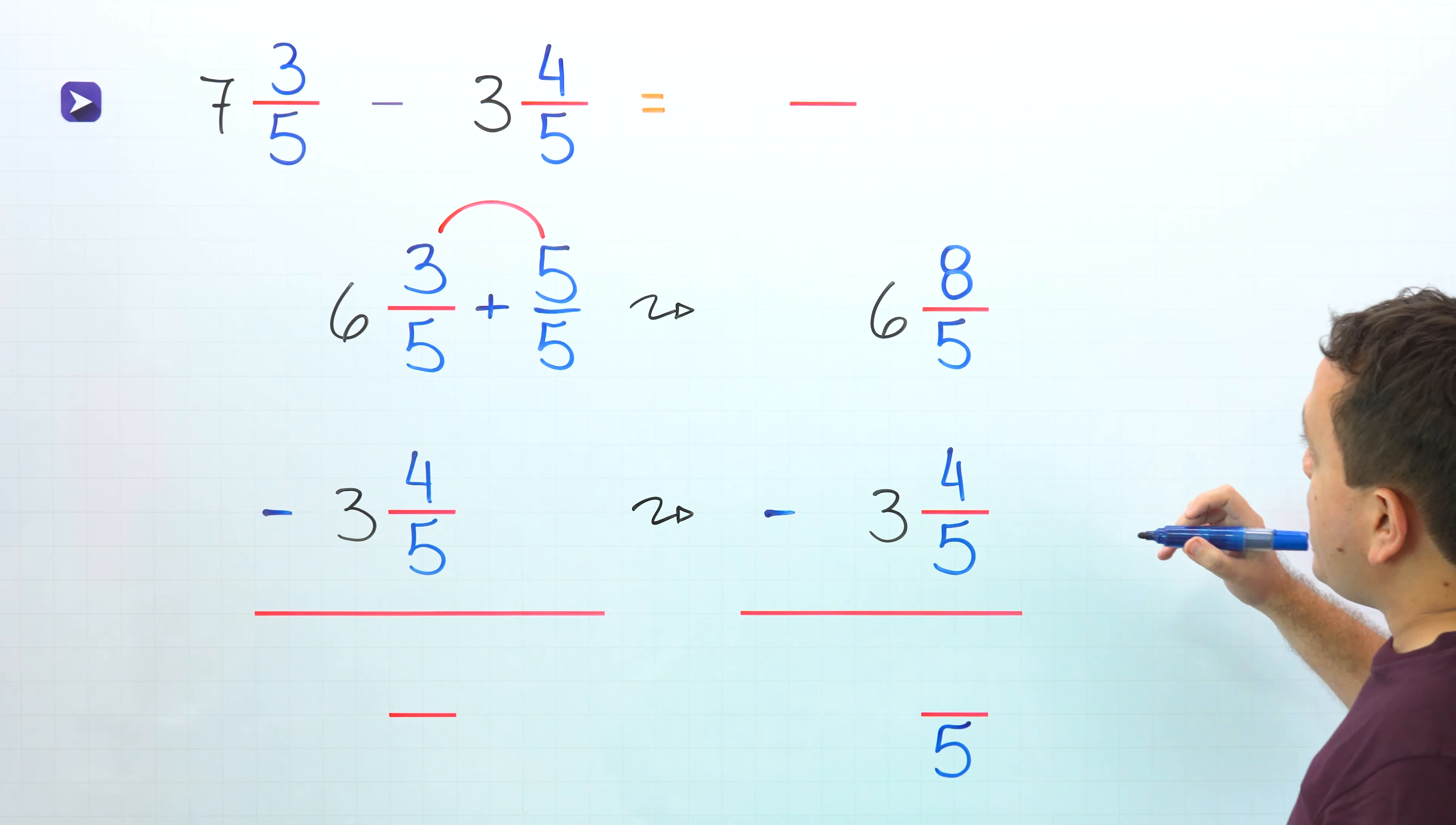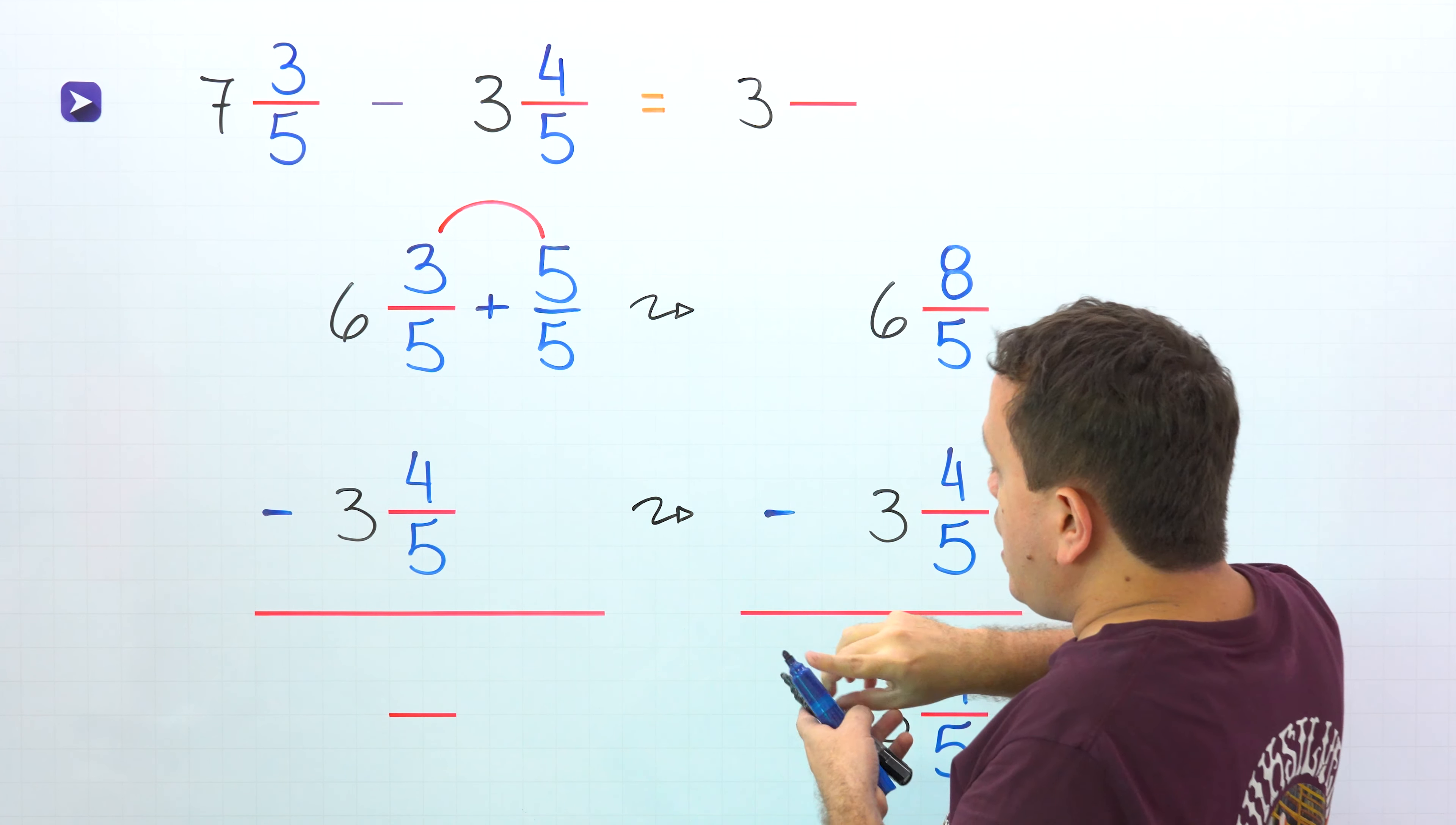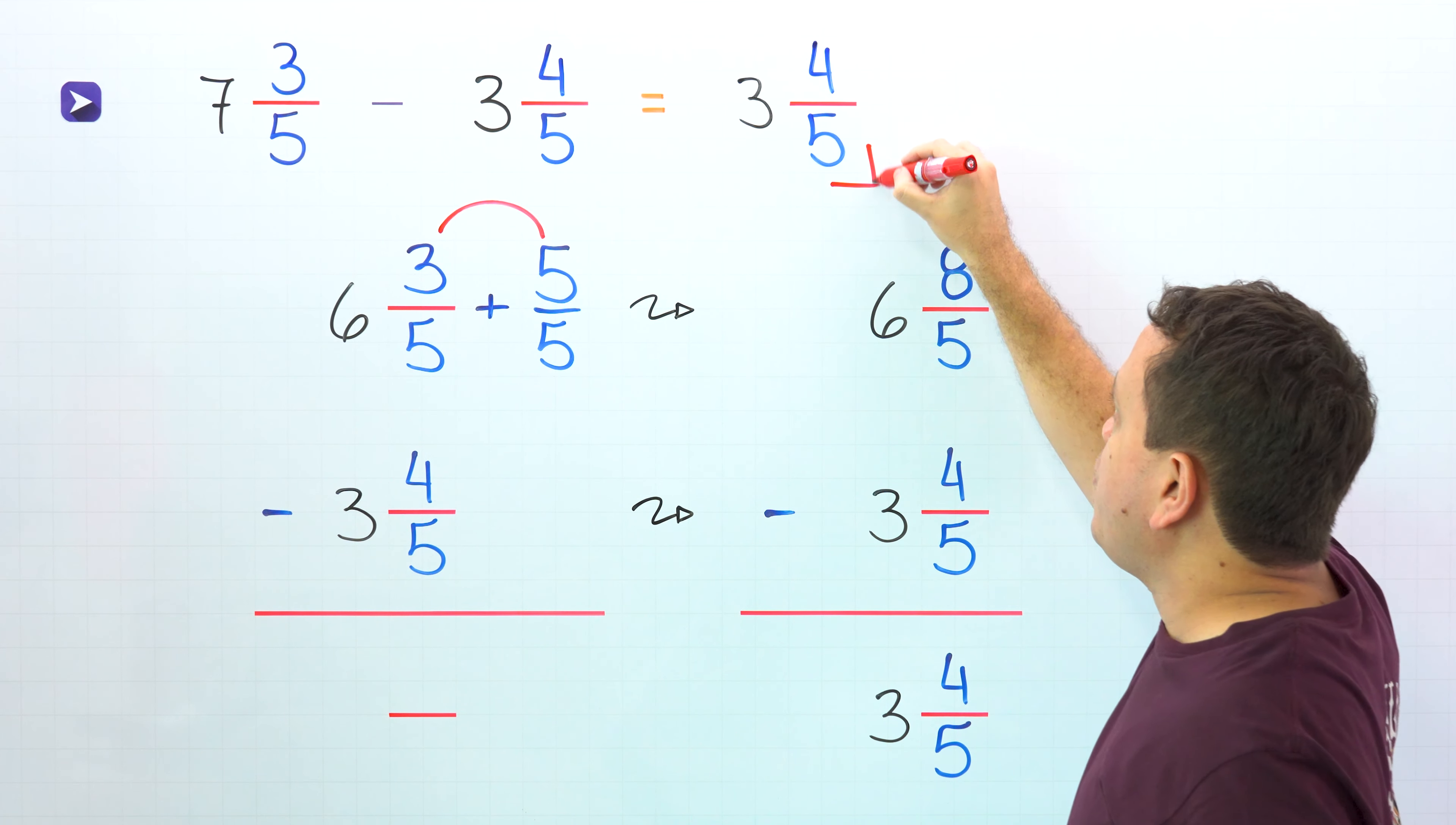Before getting into it, we need to remember that a mixed number, like this one, is the sum of a whole number and a proper fraction. Also, a proper fraction is a fraction where the numerator, the top number, is less than the denominator, the bottom number. 3 fifths is a proper fraction, given that the numerator 3 is less than the denominator 5.